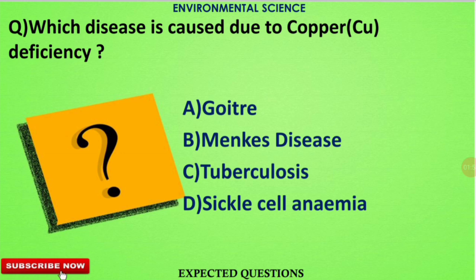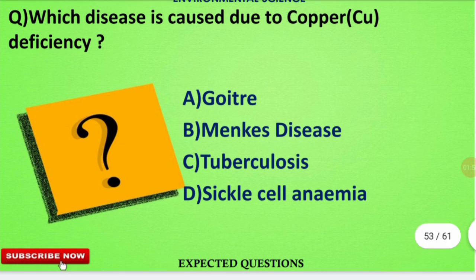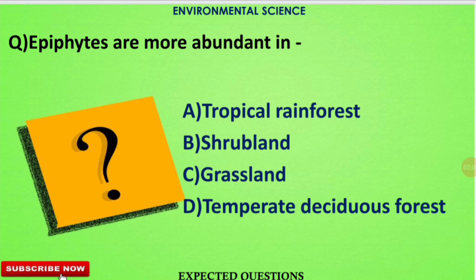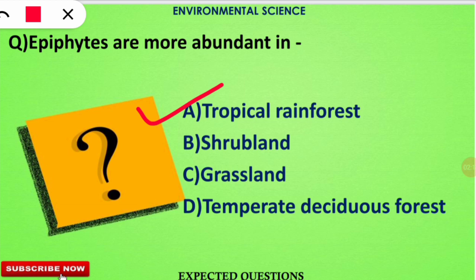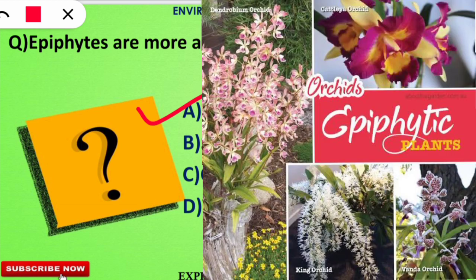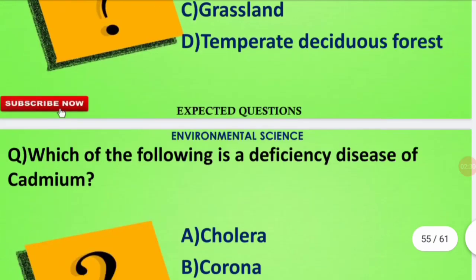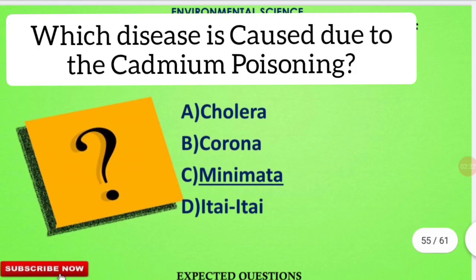The next question is: epiphytes are more abundant in which kind of ecosystem? Epiphytes show a commensalism type of interaction — those that grow on other trees for support, for example orchids, are mostly found in tropical rainforests.